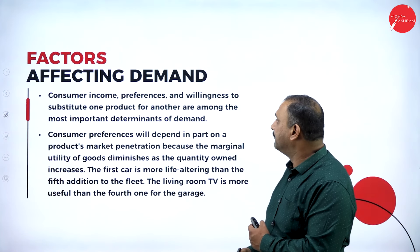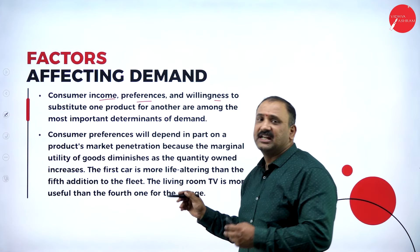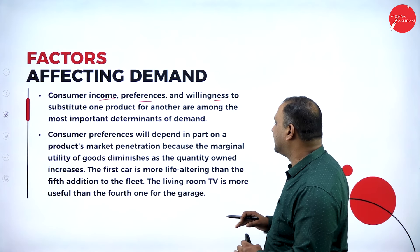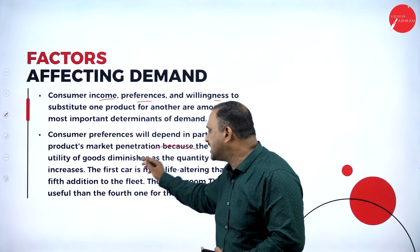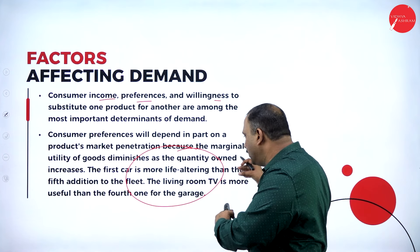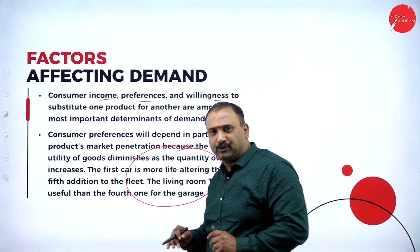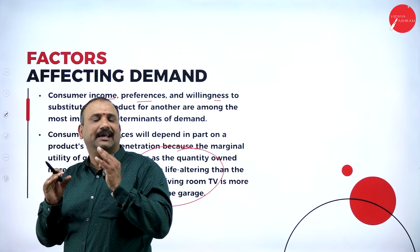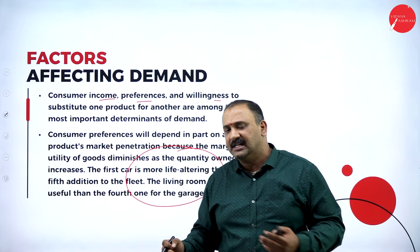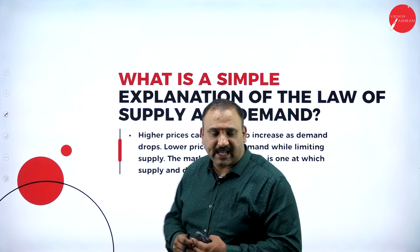Factors affecting demand include consumer income, preferences, and willingness to substitute one product for another. These factors influence market penetration, because the marginal utility of goods diminishes as quantity owned increases. For example, the first car is more life-altering than the fifth addition to a fleet, and the living room TV is more useful than the fourth one in the garage. The first time you buy something, the utility level is very high, but as you buy more, the value comes down significantly.